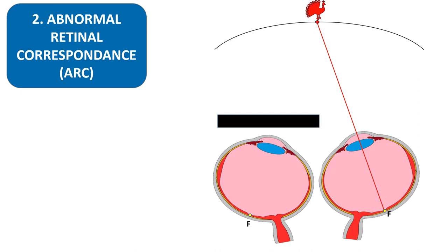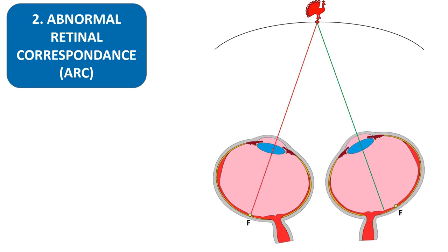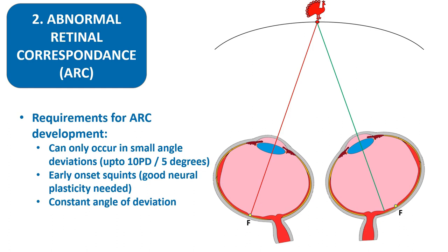An interesting point about ARC: if the normal eye is covered, the deviating eye will move back to its original position with the fovea taking up fixation. This is the primary difference between ARC and eccentric fixation — in eccentric fixation, the fixation point is always eccentric regardless of whether the normal eye is covered or not. In ARC, the moment the normal eye is covered, the abnormal eye takes up normal foveal fixation; on removing the cover, the abnormal eye once again assumes its position of the fovea and the parafoveal point. The requirements for ARC are: a very small angle deviation up to 10 prism diopters or 5 degrees, most commonly seen in microtropia; early onset squint because in children under 10 years neural plasticity is good enough to form new synaptic connections; and a constant angle of deviation — if the angle changes, ARC cannot develop and suppression would develop instead.